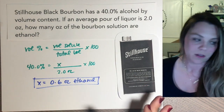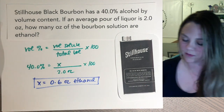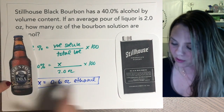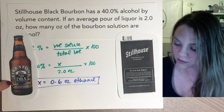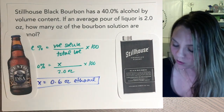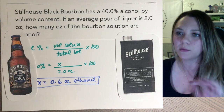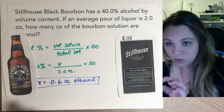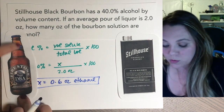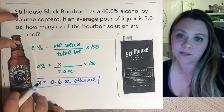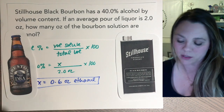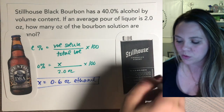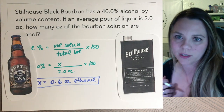So both the beer and a 2-ounce pour of bourbon would have the exact same amount of alcohol in it, which obviously 2 ounces versus 12 ounces of your total drink is a different volume — which is why you should be careful whenever you're drinking hard liquor.